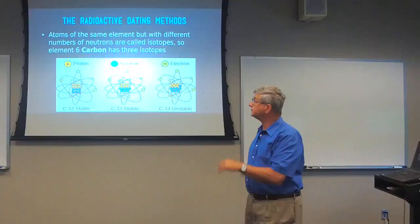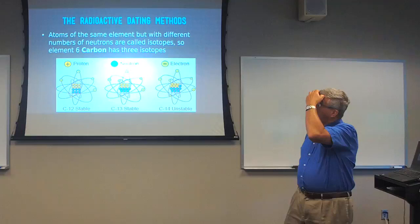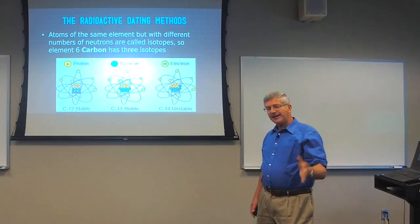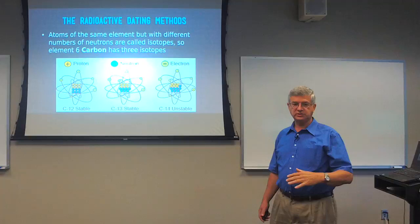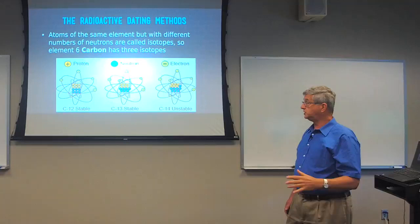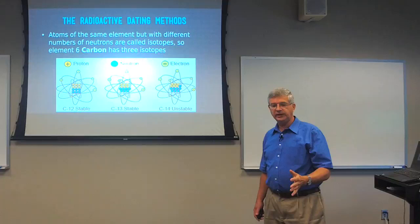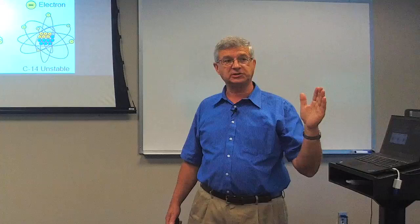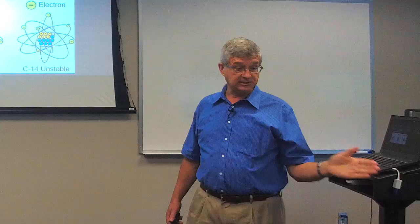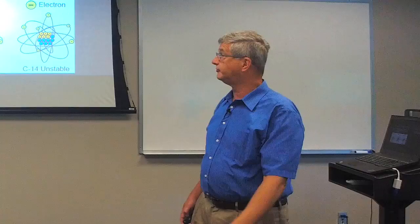Atoms with different neutron numbers are called isotopes. Carbon-12 is the regular stable isotope, carbon-13 is also stable, and carbon-14 — radiocarbon — is unstable. The atomic weight refers to neutrons plus protons. You'll sometimes hear people refer to it as radioisotope dating, short for radioactive isotopes. Radiocarbon is an example where it's unstable because of the problem holding everything together in the nucleus, so it decays to nitrogen-14.